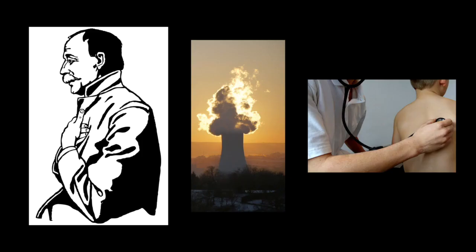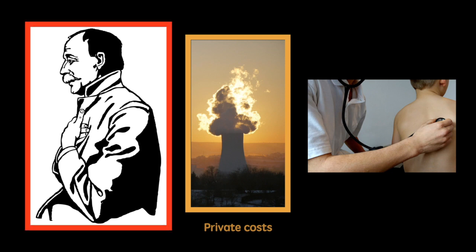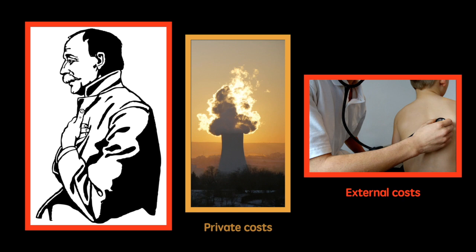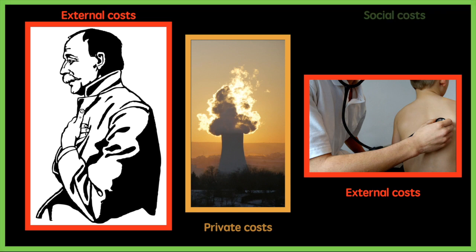Let's visualize this another way. As the firm produces goods, it faces certain direct private costs as mentioned before. Without facing any penalty for pollution, they will do so at the expense of those living nearby. These third-party individuals may suffer some respiratory illnesses. The impact of production is the damage done to the health of third parties, or the external cost. Therefore the social costs of production include all the costs of production, including both those directly incurred by the firm as well as those inflicted upon third parties.